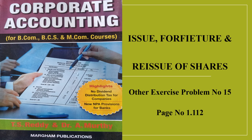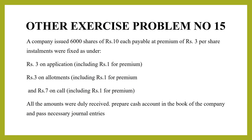Welcome to VL Academy. In this video, we discuss Issue, Forfeiture and Reissue of Shares — Exercise Problem Number 15, found on page 1.112. In this problem, 6,000 shares are issued at 10 rupees with a premium of 3 rupees. Application money, allotment money, and call money — everything has been received, so it is very easy to work out.